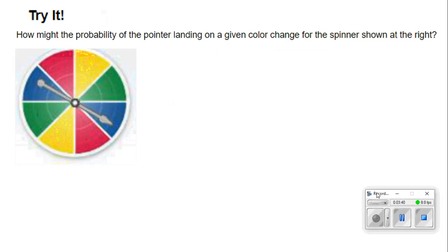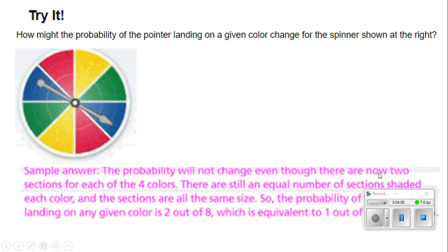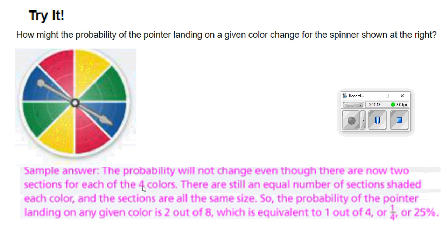Now consider a spinner with eight different sections, but two sections are the same color for each color. Will that change the probability of landing on a given color? The probability will not change, because there are still an equal number of sections shaded each color and all sections are the same size. The probability of the pointer landing on any given color is two out of eight, which is equivalent to one out of four. Two divided by eight also gives 0.25, which is 25%.